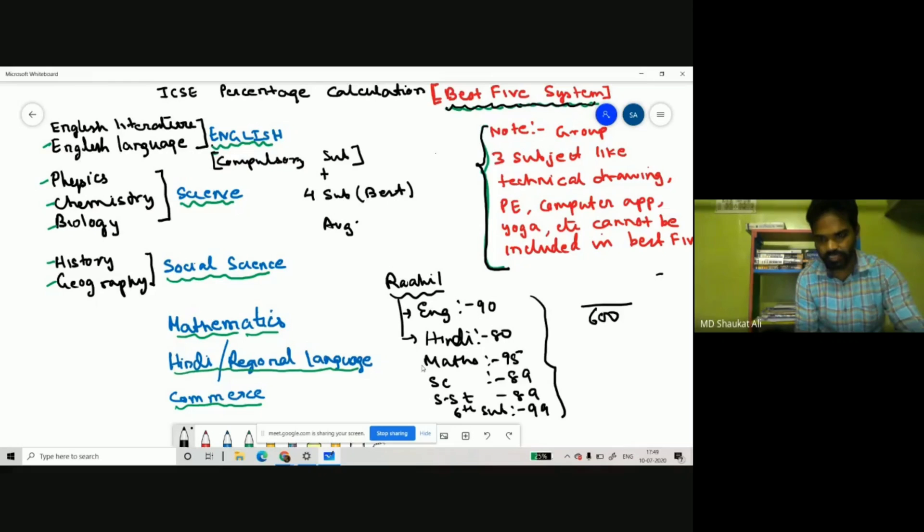He is getting 546 total, but out of 500 for his best five, if we exclude Hindi because he got less in Hindi and English he has to include, he is getting 466. So 466 divided by 500 times 100 will give you his percentage.